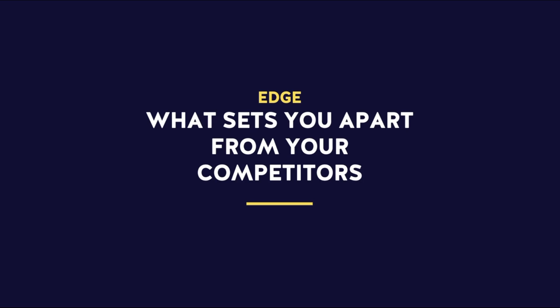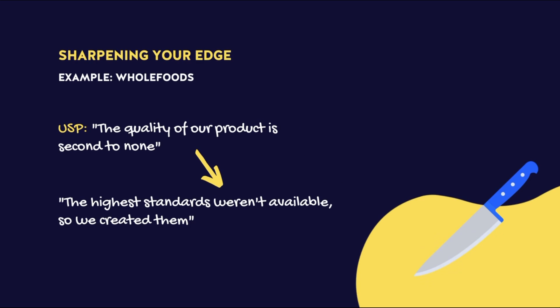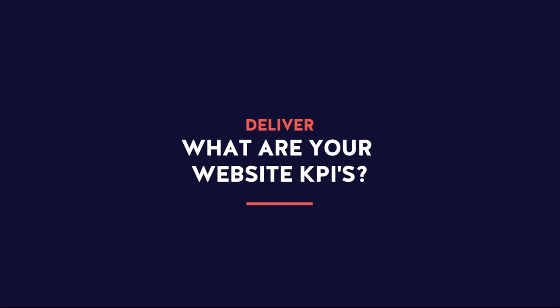Here's a quick example with Edge — these are our USPs, unique selling points, things that simply set us apart from our competition. Statements we can get around and say, this is why we want to work with you and this is why you should work with us. Here's an example from Whole Foods: a dry, uninteresting USP — 'the quality of our products is second to none' — sharpened into a sales message that resonates with the audience: 'The highest standards weren't available, so we created them.' Have a think about what your KPIs are and what sets you apart.